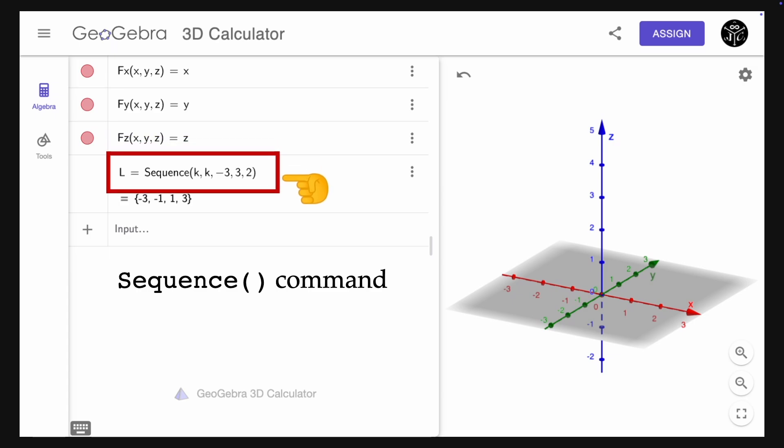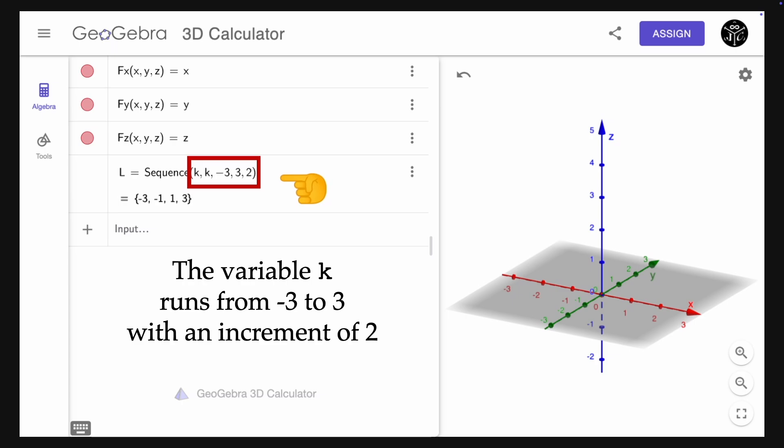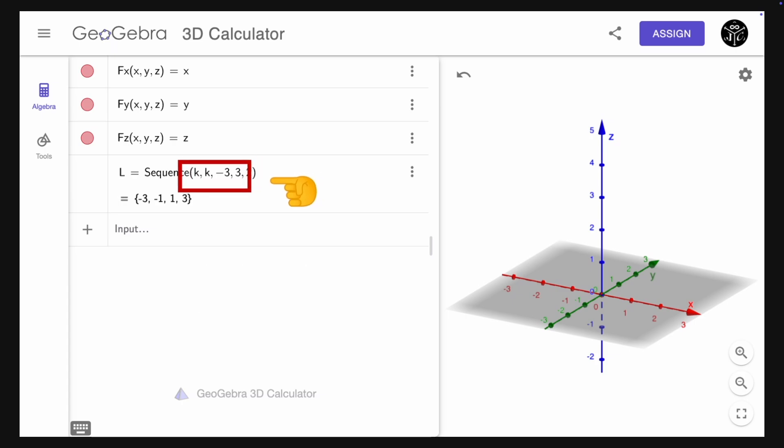Now let's define a list L using the command sequence. Here, the variable K runs from minus 3 to 3 with an increment of 2, so we obtain a sequence of numbers as a list.